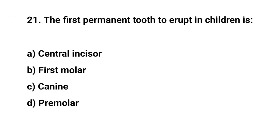Question No. 21. The first permanent tooth to erupt in children is? The right answer is B: First molar.